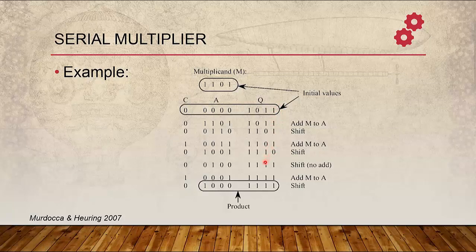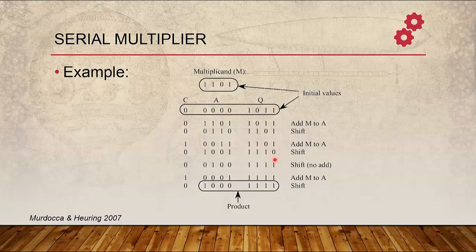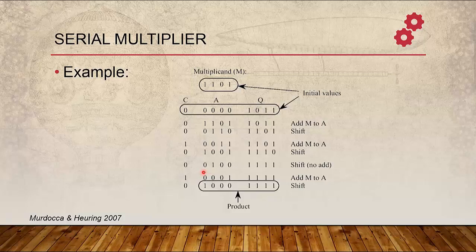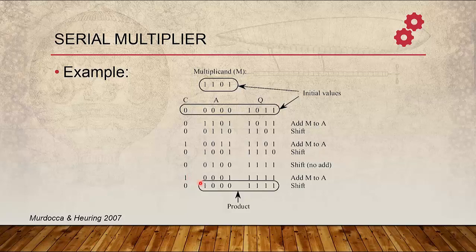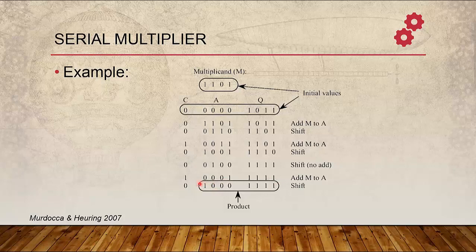After shifting without adding in the third iteration, LSB in Q is again 1. So we have to add Multiplicand again, 1101 to 0101, and we get 10001 with a Carry of 1. After that, in the last iteration, we also need to shift it. So this is the final product.